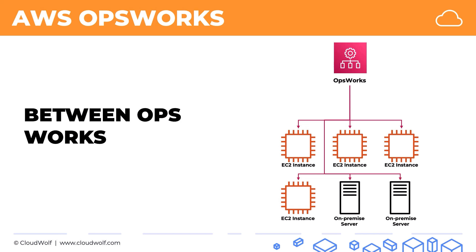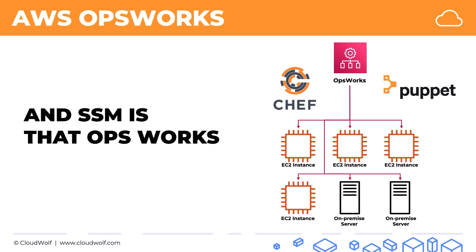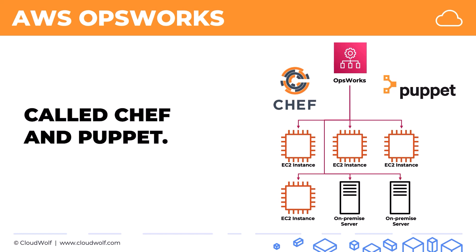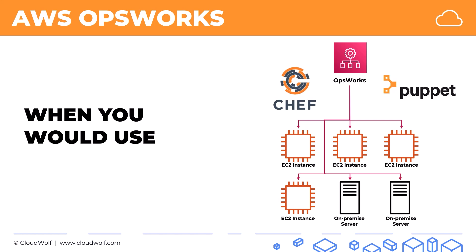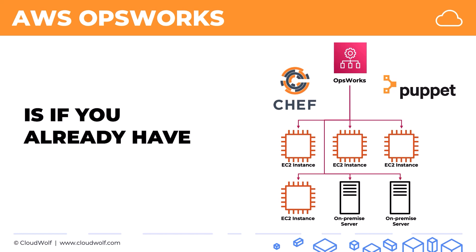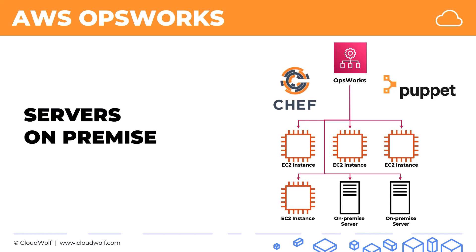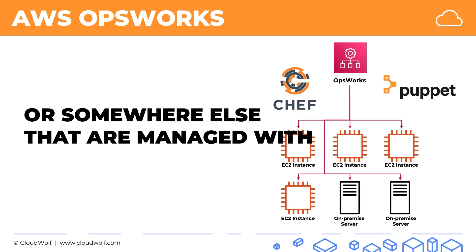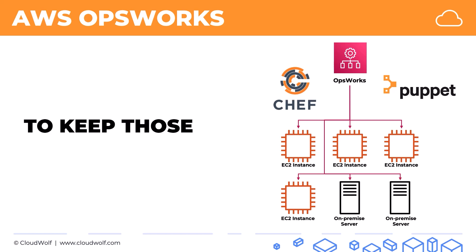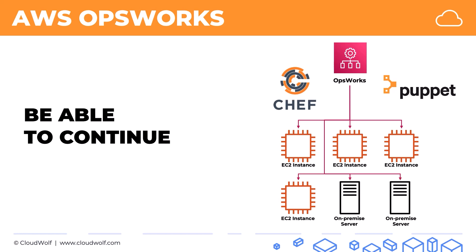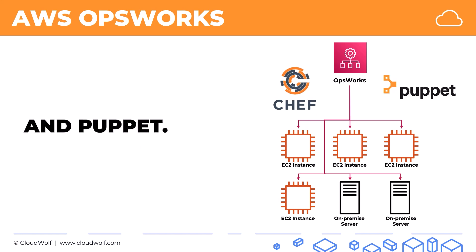The difference between OpsWorks and SSM is that OpsWorks works with third-party tools called Chef and Puppet. One of the cases when you would use OpsWorks is if you already have a fleet of servers on-premise or somewhere else that are managed with Chef and Puppet, and you want to keep those configurations and continue working through Chef and Puppet.